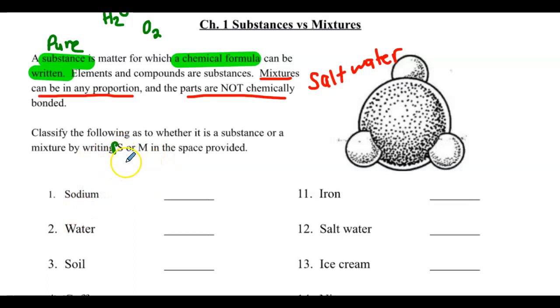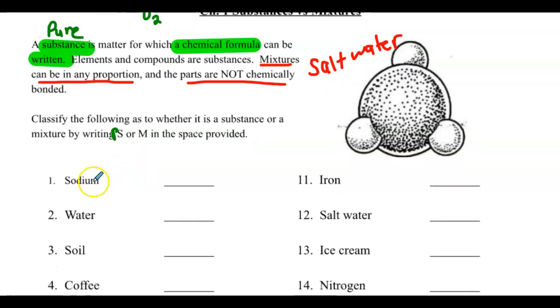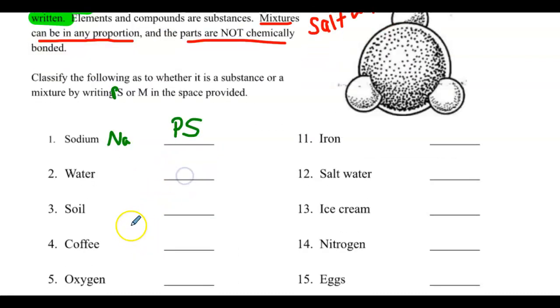I'm going to actually write P.S., pure substance or mixture. I'm going to do a quick scan through, and then I'll go back, look for mixtures, and if anyone's tricky, we'll put a star and discuss them. So sodium, I can find that on the periodic table. The formula is Na. It's a pure substance.